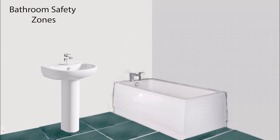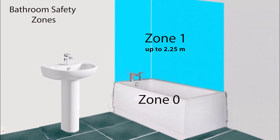Zone 0 is the bathtub itself and then we have zone 1. Everything above a bathtub up to 2 meters 25 centimeters is zone 1 and we're not allowed to install the shaver socket there.